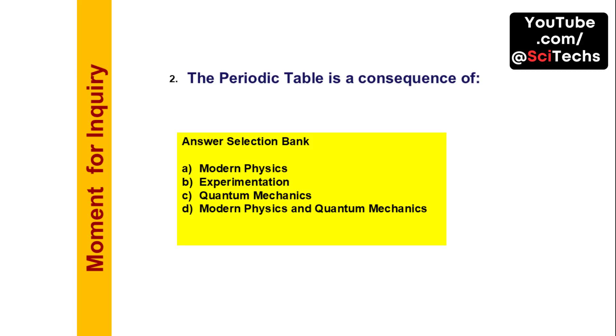Another moment for inquiry: The periodic table is a consequence of which scientific principles? Choose from modern physics, experimentation, quantum mechanics, or modern physics and quantum mechanics.